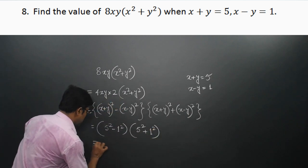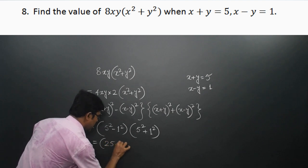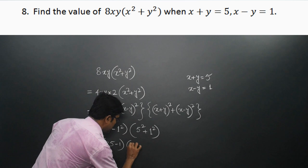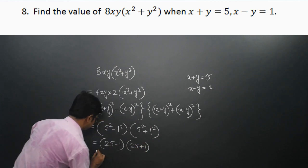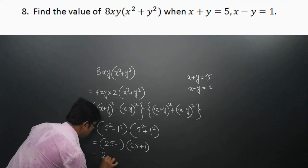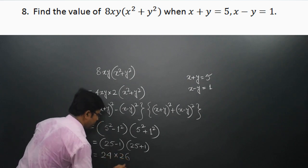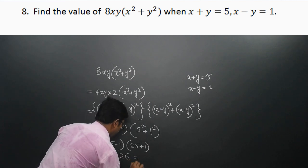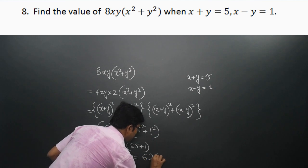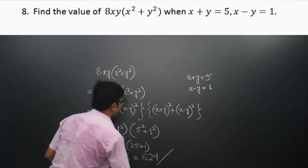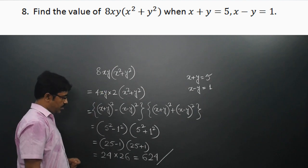So it is (25 − 1) × (25 + 1), that is 24 × 26, which equals 624. This is the value of 8xy(x² + y²).